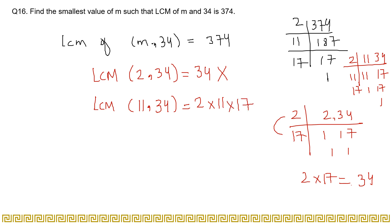2 times 11 is 22. And 22 multiplied by 17, let's check it. 7 times 2 is 14, 7 times 2 is 14 plus 1 is 15, 1 times 2 is 2, 1 times 2 is 2, giving us 374.